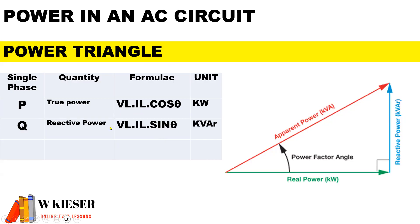The symbol Q is reactive power and the unit is volt amps reactive. We use the line values and we multiply by sine theta.